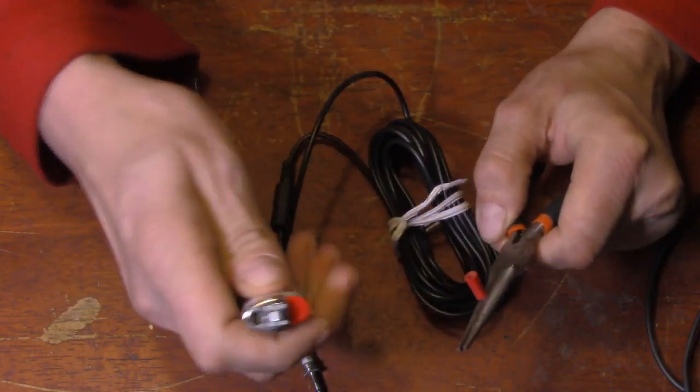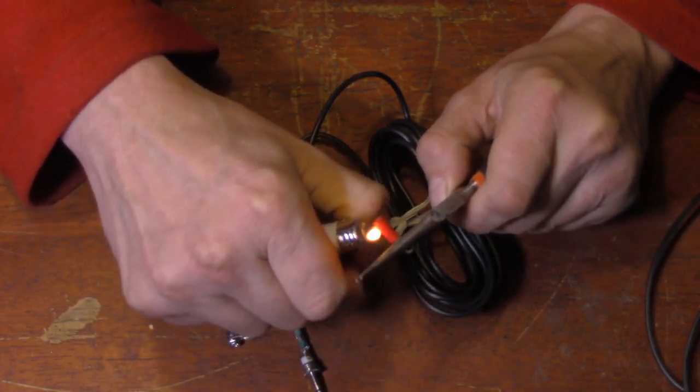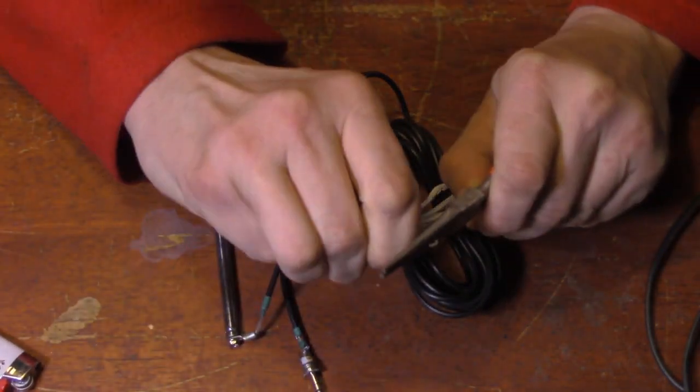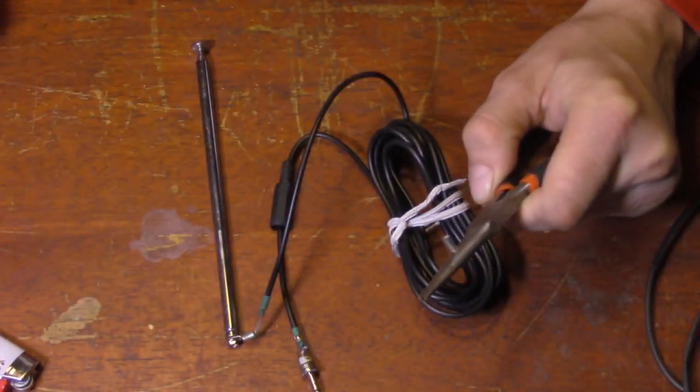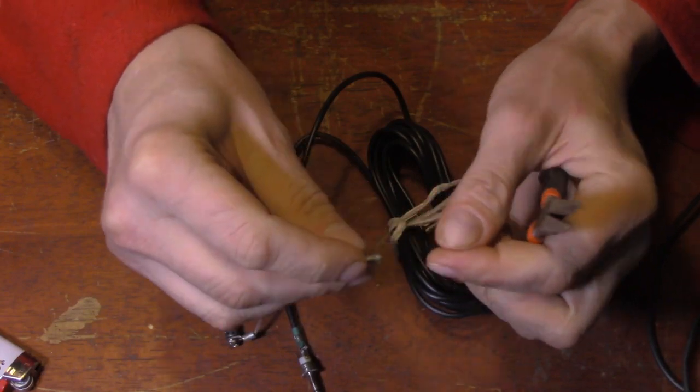So, what you can do is just take a lighter, heat it up a little bit. It don't take much. Just be careful. It'll get a little warm and you can pull that off. Then, you got your little eyelet connector that we can solder to.